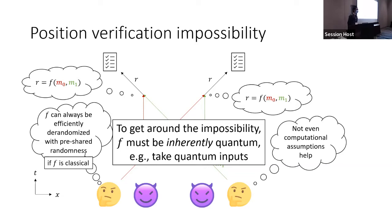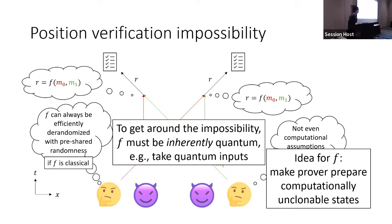Our idea is to find a classical function f that can only be computed by a quantum computer, potentially getting around the impossibility. Our approach is to make the prover prepare computationally unclonable states — similar to the BB84 conjugate coding states used in the previous protocol — and to somehow enforce the adversary to prepare such a state.